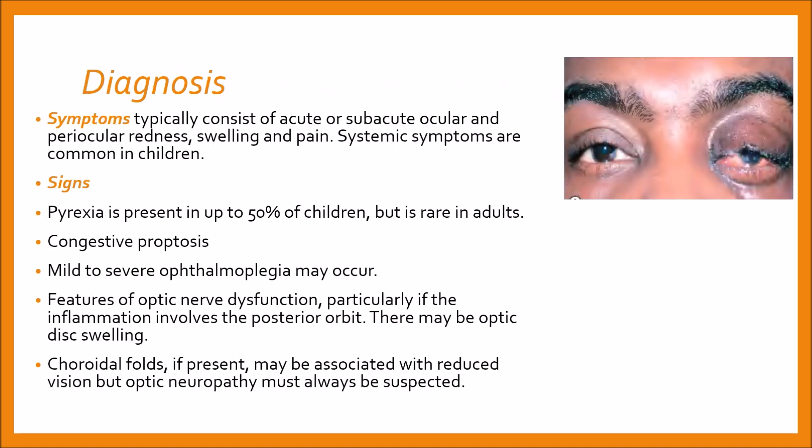Diagnosis is based on symptoms and signs. Symptoms typically consist of acute and subacute ocular and periocular redness, swelling, and pain. Systemic symptoms are common in children. Pyrexia is present in up to 50% of children but is rare in adults. Signs include congestive proptosis, and mild to severe ophthalmoplegia may occur. Features of optic nerve dysfunction are seen, particularly if the inflammation involves the posterior orbit.